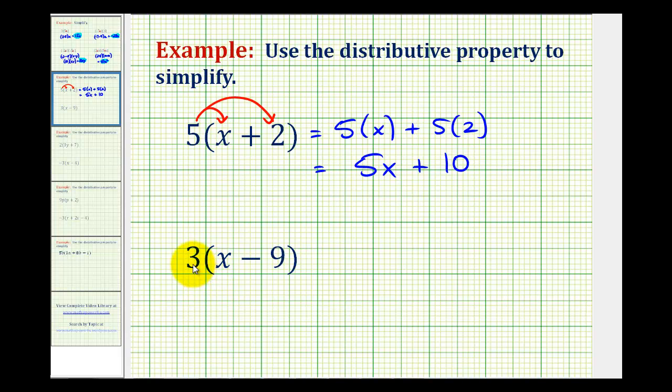In the second example, we're distributing positive three, so I'll have positive three times x minus positive three times nine. So we'll have three times x minus three times nine. Well, three times x is equal to three x, minus three times nine is equal to twenty-seven.